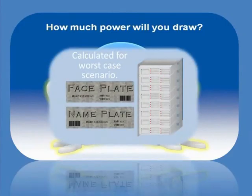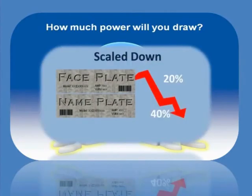Equipment manufacturers provide a nameplate or faceplate power ratings. These ratings are often calculated for a worst-case scenario. In reality, actual day-to-day power draw is often much less. Some IT departments take faceplate ratings and scale down from 20% to 40% when factoring in power.